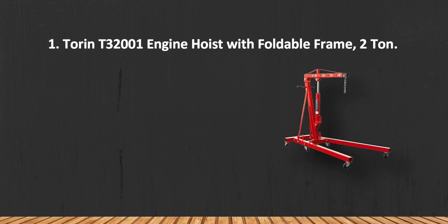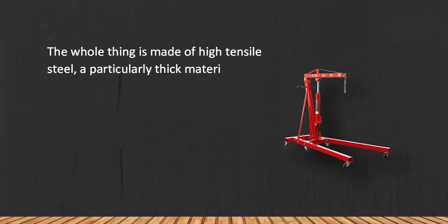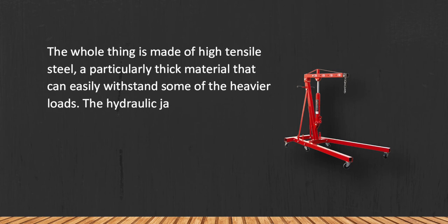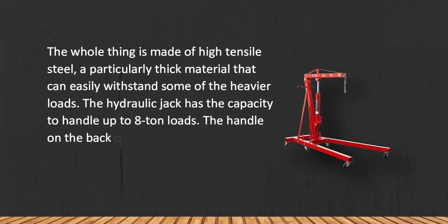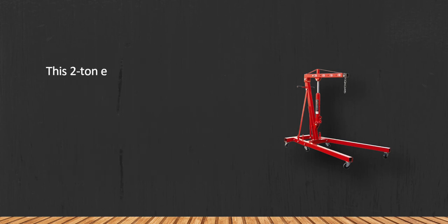At number 1, Taurin T3 2001 Engine Hoist with Foldable Frame 2 Ton. The whole thing is made of high tensile steel, a particularly thick material that can easily withstand some of the heavier loads. The hydraulic jack has the capacity to handle up to 8 ton loads. The handle on the back of the main tube comes with rubber grips, so it will be easier and more convenient to push the hoist around.